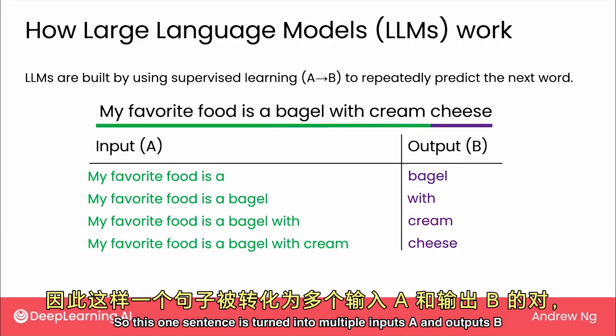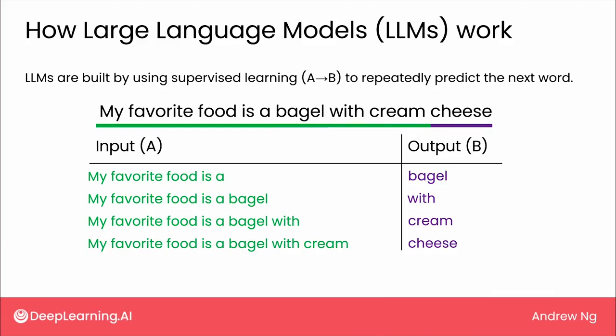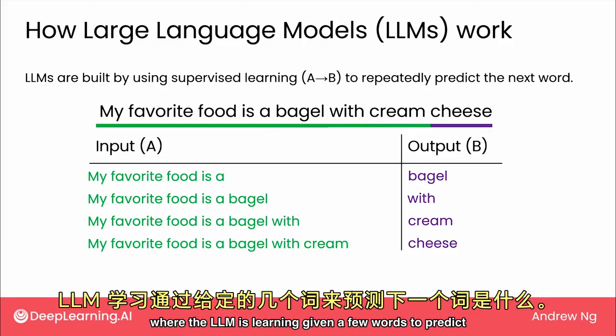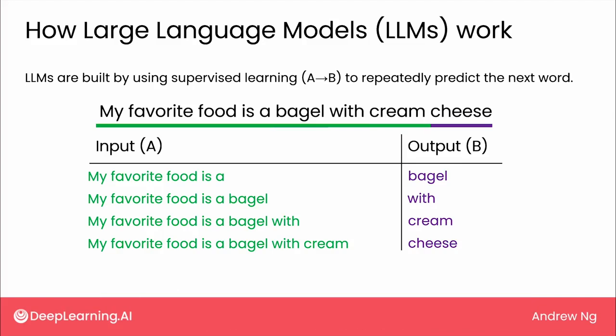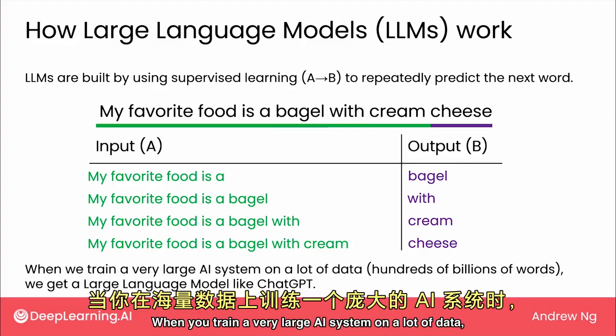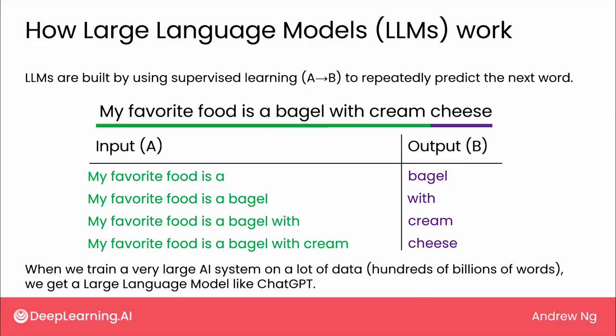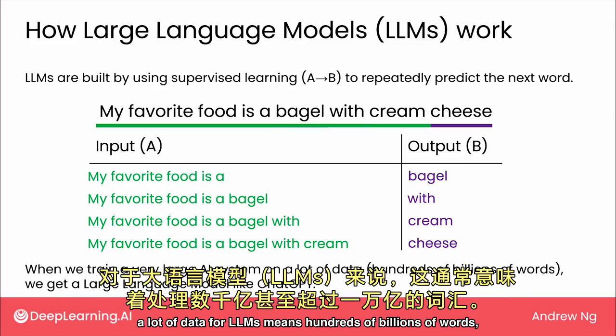So this one sentence is turned into multiple inputs A and outputs B for it to try to learn from, where the LLM is learning, given a few words, to predict what is the next word. When you train a very large AI system on a lot of data, a lot of data for LLMs means hundreds of billions of words,